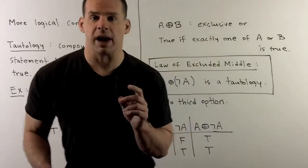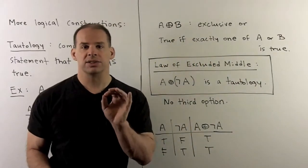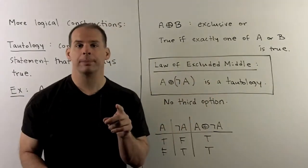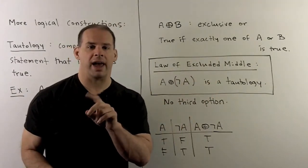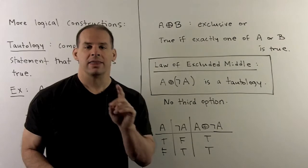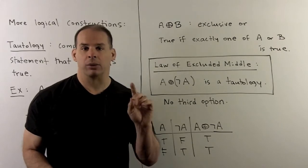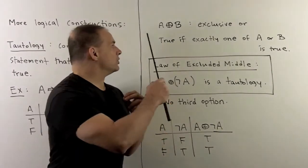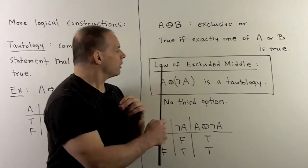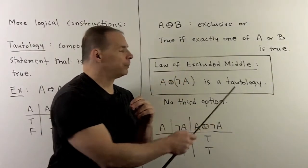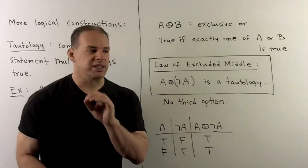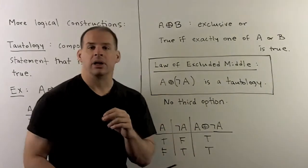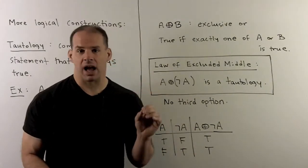For another example, recall that A exclusive-or B means exactly one of A or B is true. We can use this to set up the law of the excluded middle. This is the statement A exclusive-or not-A, and the result is that this is a tautology.